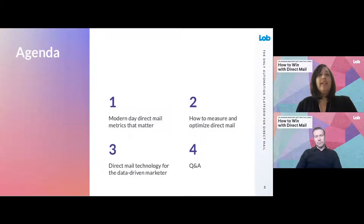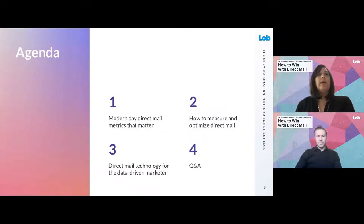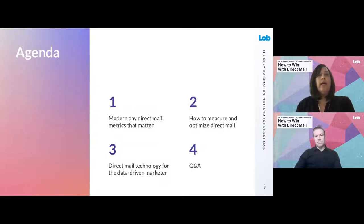Let's take a quick look at the agenda. We're going to start with how metrics have changed since direct mail automation got on the scene — if you've been doing this for a while, you're going to really appreciate this before and after story. Then we're going to give you some tips and tricks to measure and optimize direct mail, and end with the technology you need to be a data-driven superstar. We'll have about 10 minutes left to answer your questions in real time, so please use the Q&A tab at any point.